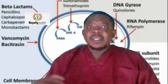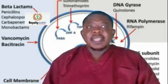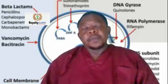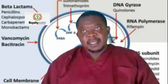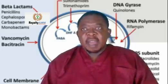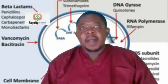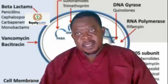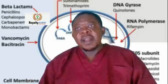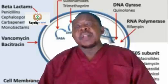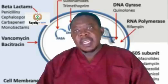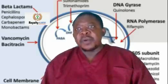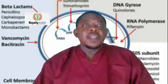Human cells do not contain DNA gyrase and have a different type of topoisomerase instead. So when we target that of the bacteria, we are going to kill the bacteria that is affecting human beings without necessarily tampering with normal human cell function.